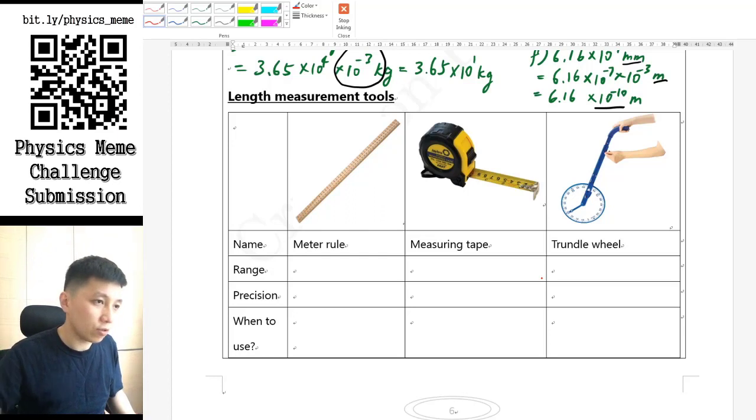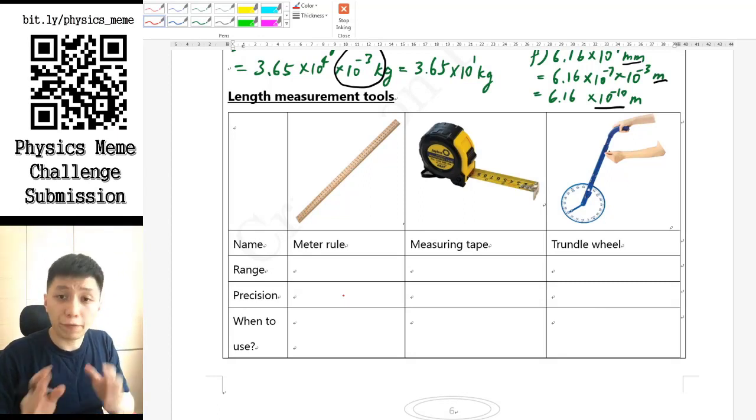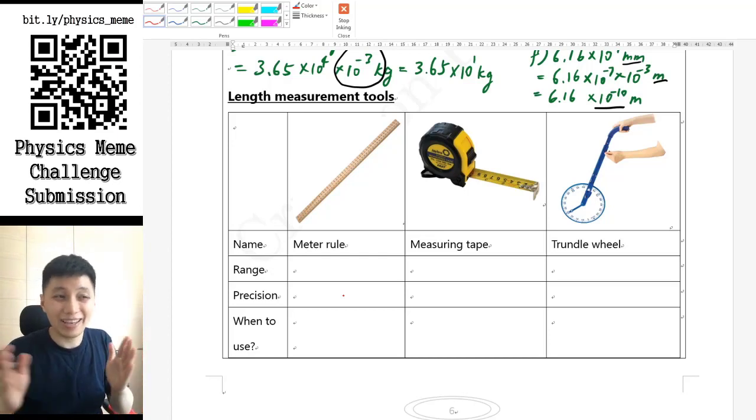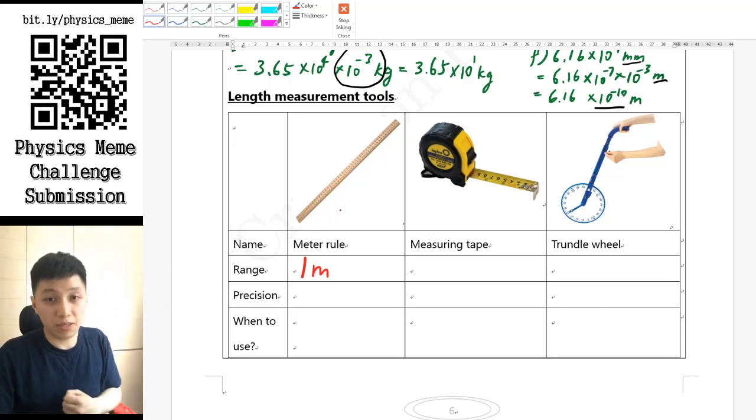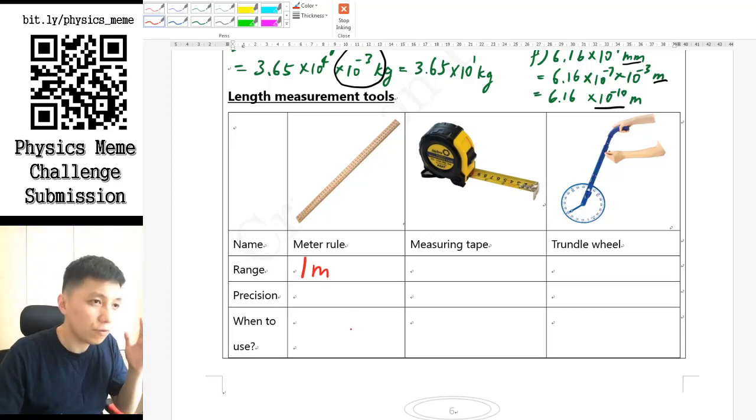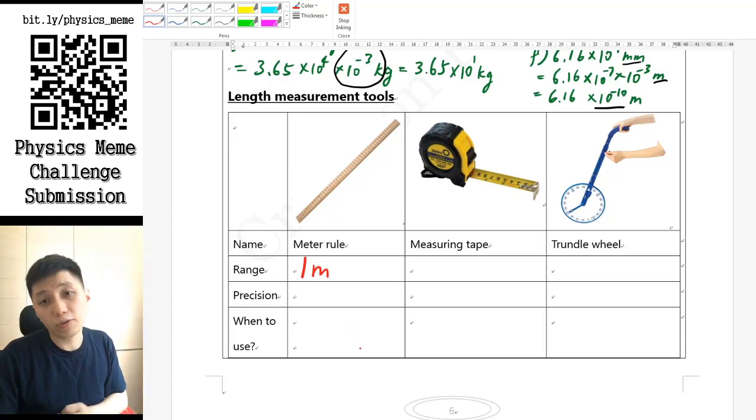For the first one is called the meter ruler, which I'm pretty sure you've seen in junior science. For its range, it's referring to how far the maximum that it can measure up to. So obviously it is one meter, and that's why it's called meter ruler.